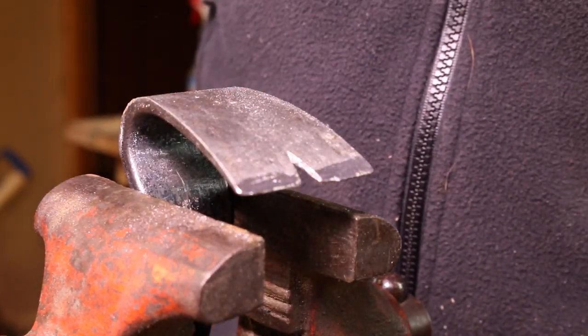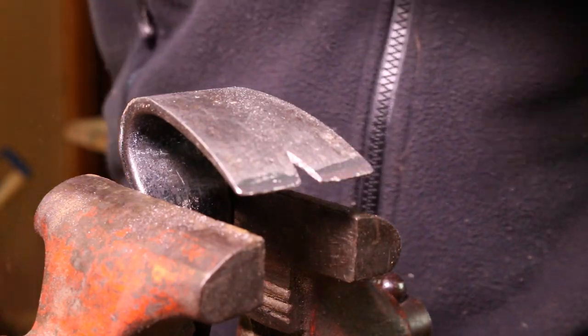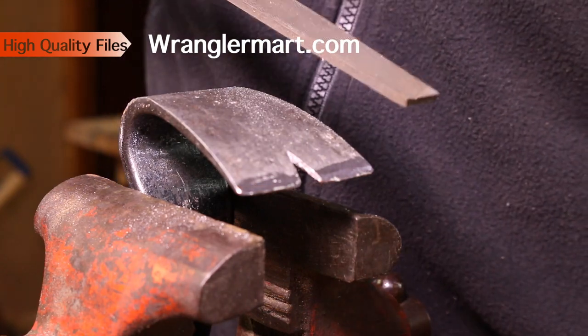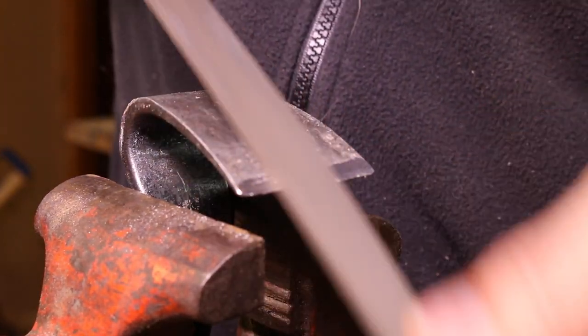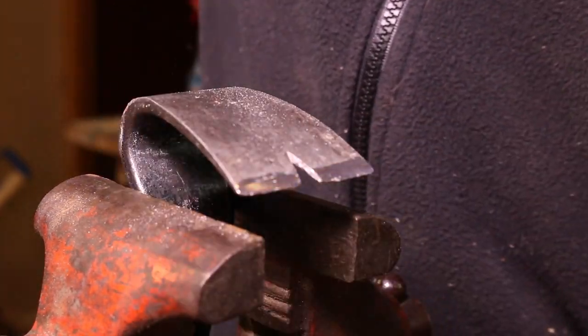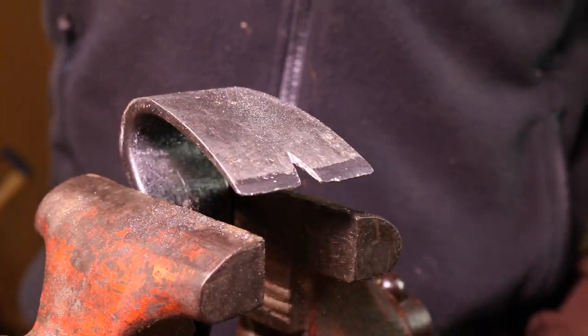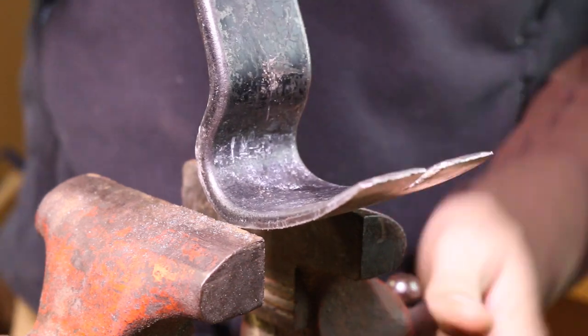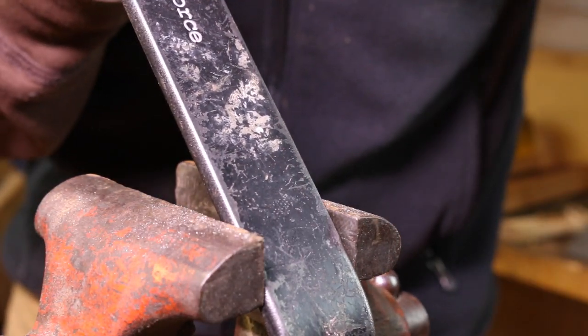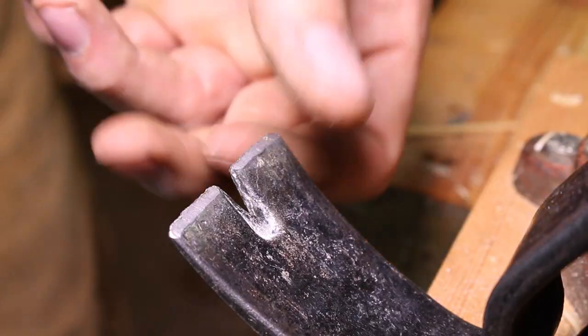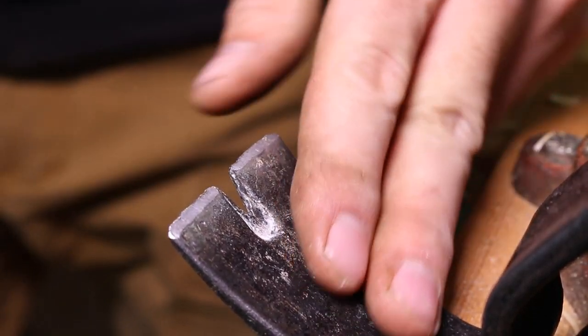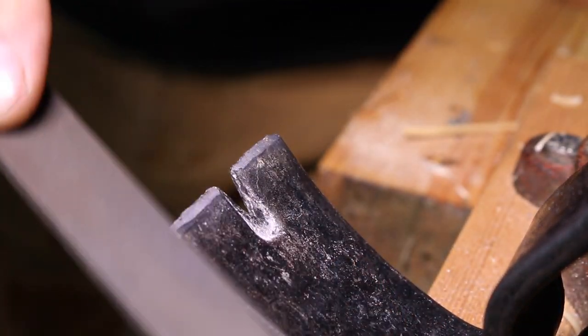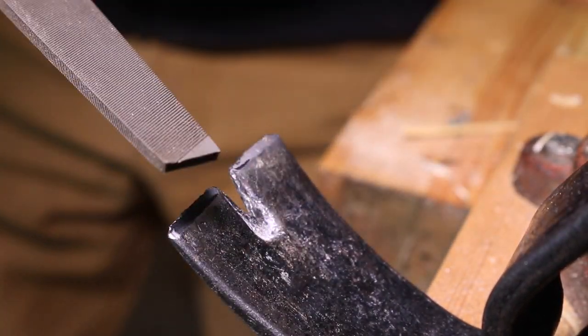Look how it cuts. You can see the shavings rolling off of it. It's one of those wonderful experiences. It doesn't take very much. You can see right there, we're flattened out really nicely. That's all we need. So now we've got to deal with this chisel edge.